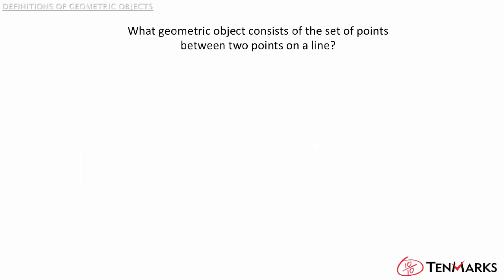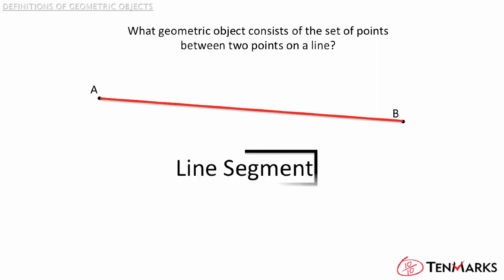What geometric object consists of the set of points between two points on a line? So draw a line, draw two points on that line, and then shade in the line between those two points. As you can see, you have created a line segment. A set of points between two points on a line. Try one last problem.